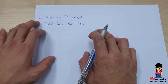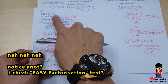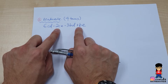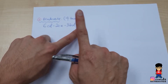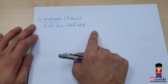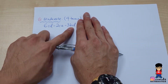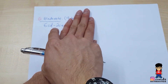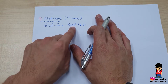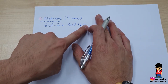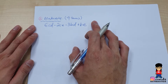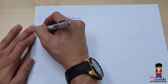For this 4-term question, the first thing we do is check easy factorize. Check numbers: 6, 2, 3, and 1 — can all four be divided by the same number? No. Check unknowns: CD, CE, BD, BE — is there any unknown that repeats across all 4 terms? No. So we skip easy factorize and move on to moderate.